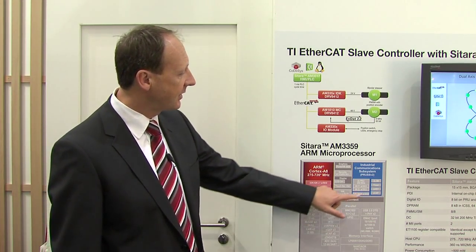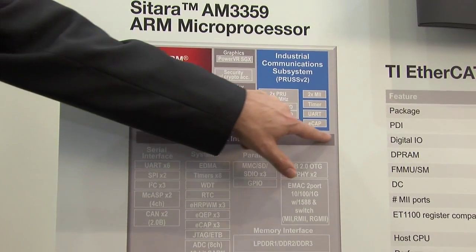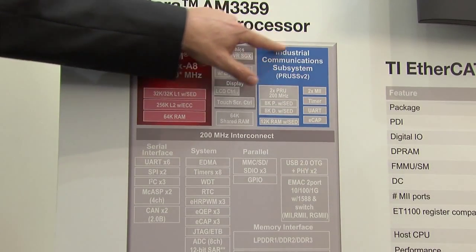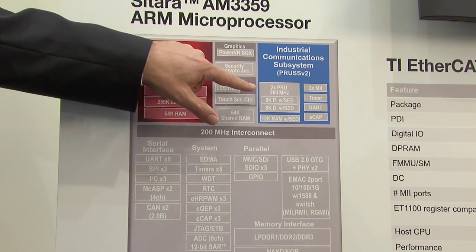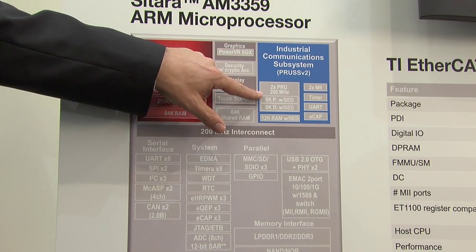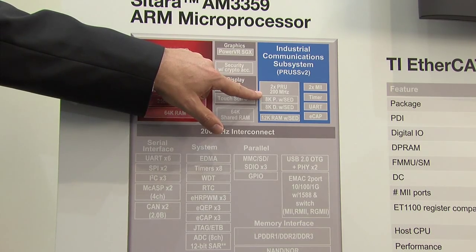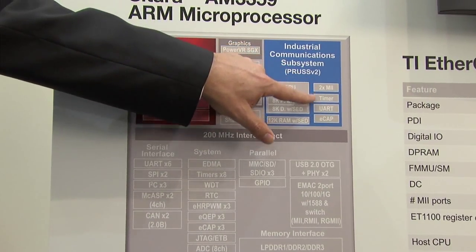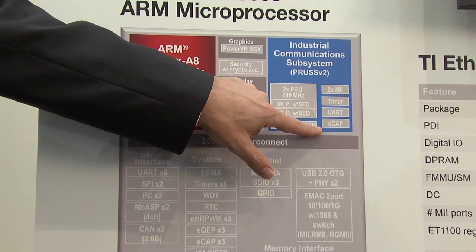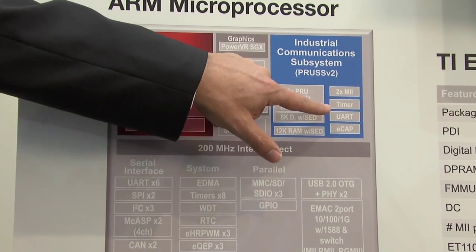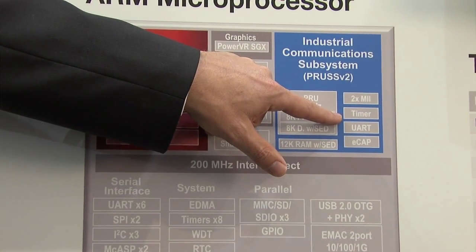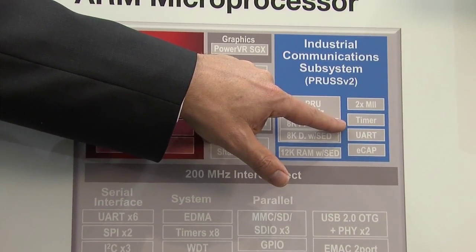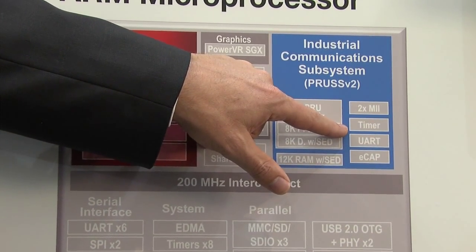It's complemented by industrial Ethernet peripherals which allow us to connect two industrial Ethernet PHYs at 100 megabit. It also has an industrial Ethernet timer to synchronize packets with the local clock.